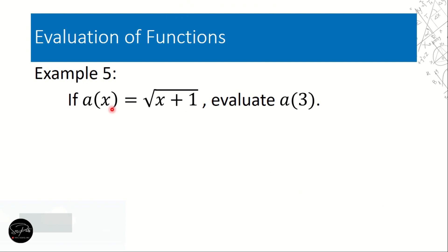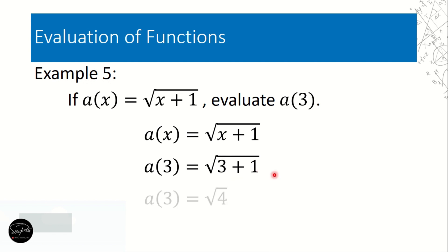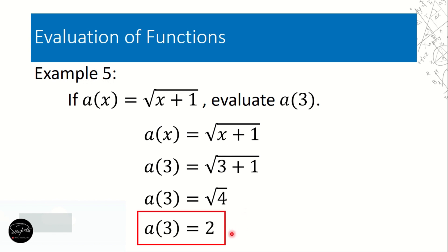Example number 5: if a(x) = √(x + 1), we have a square root symbol. Evaluate a(3). Copy the function: a(x) = √(x + 1). Remove x and replace with 3: a(3) = √(3 + 1). Evaluate 3 + 1 = 4, so we have √4. The square root of 4 is 2. The answer is 2.